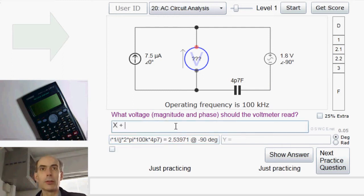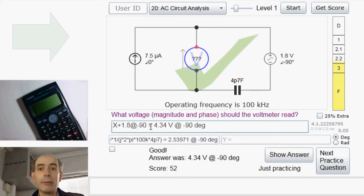So that is x, I've just worked it out in the x box here, plus 1.8 at a phase angle of minus 90. That's it. Let's do a couple more.